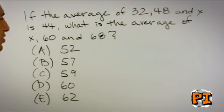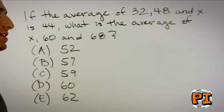If the average of 32, 48, and x is 44, what is the average of x, 60, and 68? The formula for averages is simple. You add the numbers up and then divide by however many numbers you have in order to find the average.